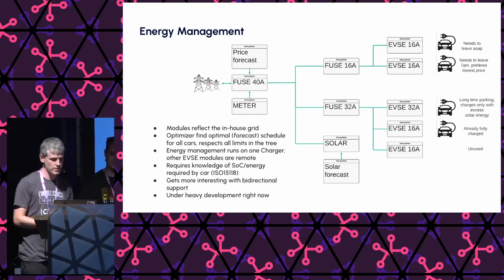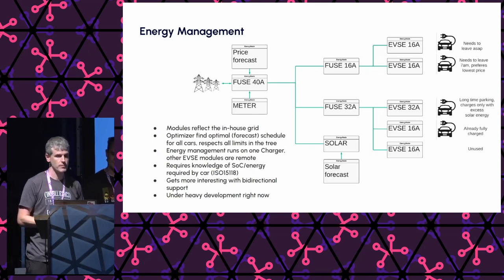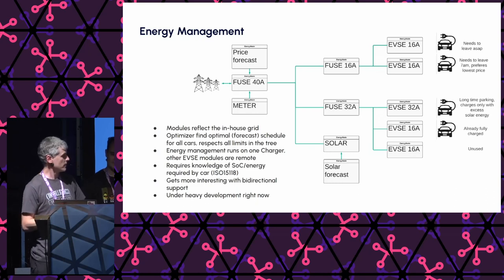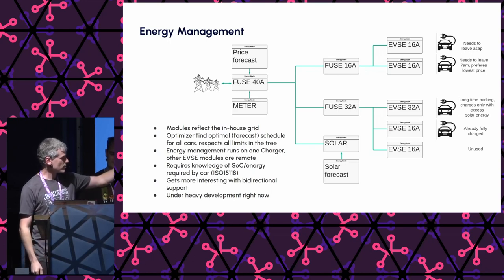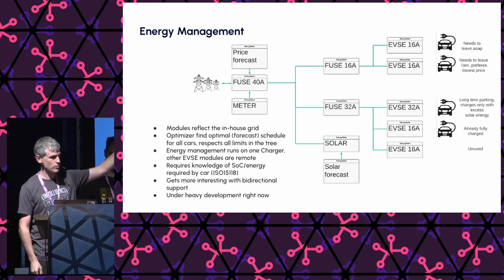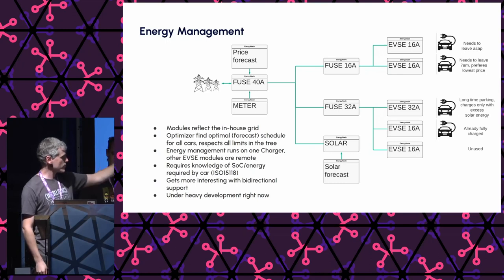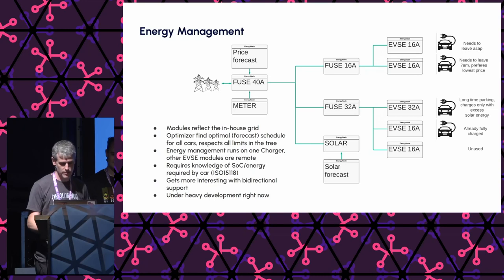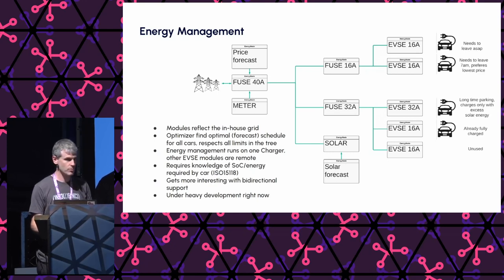The whole energy management gets a lot more interesting when cars can charge bidirectionally — drawing power from the cars back into the grid — because then you can do a whole lot more optimizations. For example, the car using excess solar energy but with no fixed departure time can be discharged to charge the car that needs to leave as soon as possible. Because once that car is gone, we can recharge the other one with solar power again. So the whole optimizer gets a lot more complicated. That part is under heavy development and there will be a small workshop on it tomorrow morning at 11 a.m.